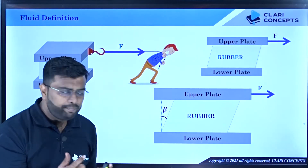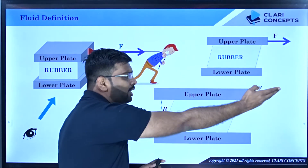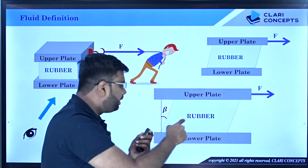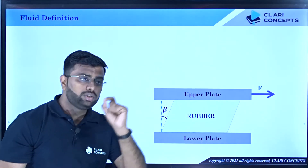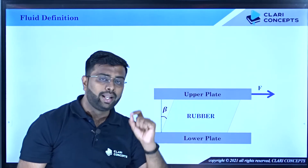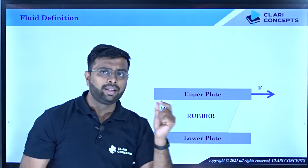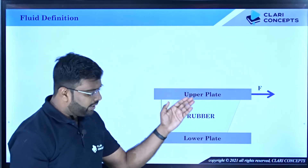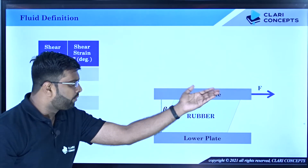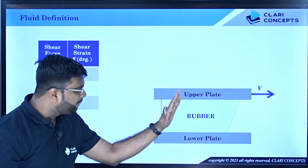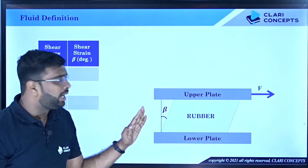The angle of inclination is called beta — the angle of deformation. If the force increases, the value of beta changes. Importantly, once the force reaches a particular value, the beta angle becomes fixed and does not increase further. For example, with 1 Newton of force, the rubber deforms to a fixed angle, say 3 degrees, and stays there.